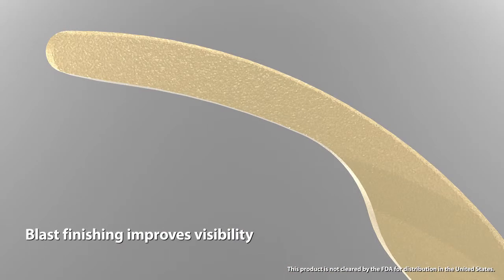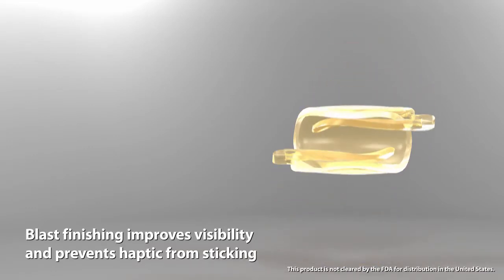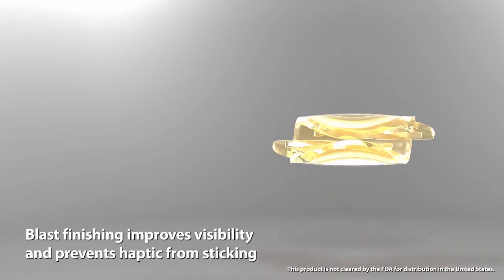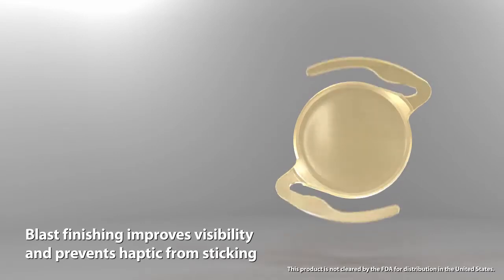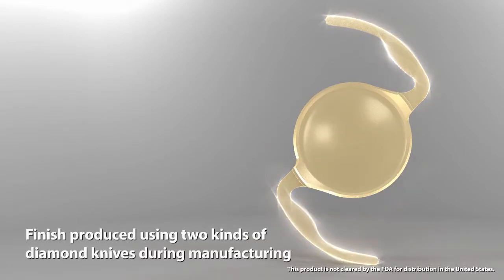Blast finishing on the haptic surface improves visibility and prevents the haptic from sticking to the optical surface while the lens is folded. In addition, it enables faster unfolding when injecting the lens into the capsule. This finish is produced using two different kinds of diamond knives during manufacturing.